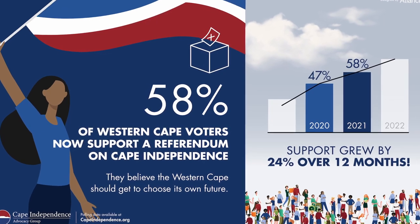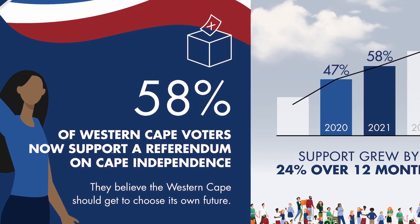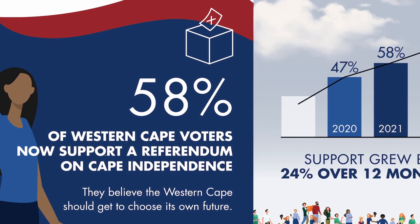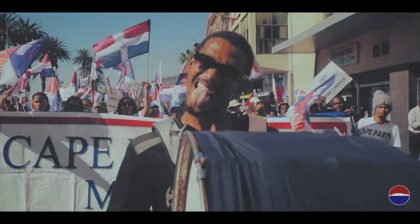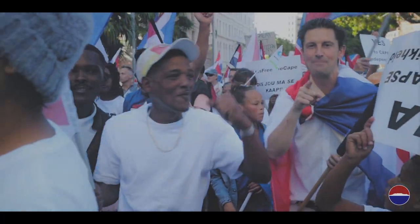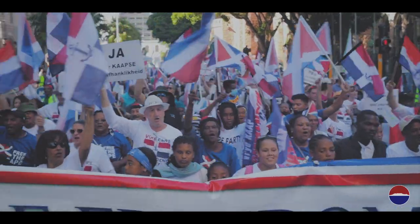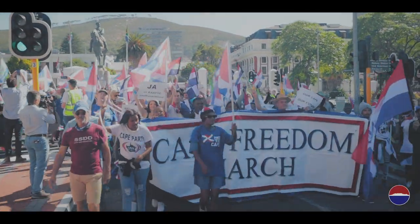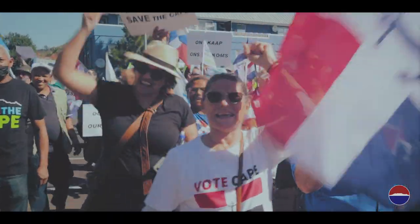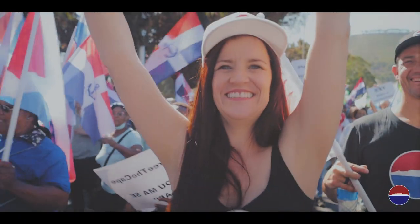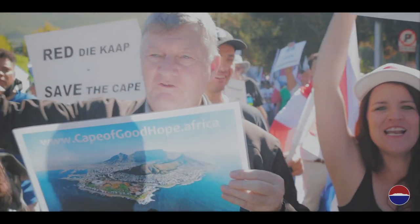With 58 percent of Western Cape registered voters supporting independence, according to a poll conducted in July 2021, if the Cape were to become independent it would likely come about as a result of a victory in an independence referendum, or possibly due to South Africa inevitably collapsing on itself. With its independence secured, the newly independent Cape Republic would now need to choose its form of government.